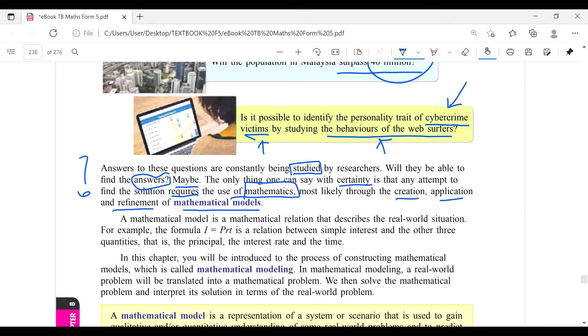A mathematical model is a mathematical relation that describes the real world situation. For example, you know this: I = PRT for simple interest, where I is the simple interest and the other three quantities are the principle, the interest rate in percentage, and the time in years. These are the variables. The quantities, we call it also variable.